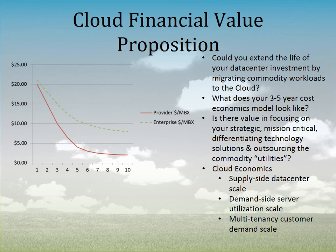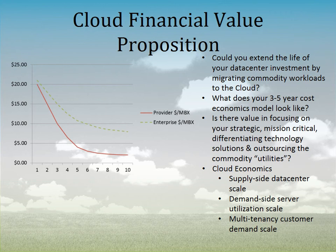And finally, multi-tenancy. If multiple organizations sign up for an email service, Microsoft, Google, or IBM puts a large number of customers on a single environment. By having that multi-tenancy customer demand at scale, the cost per each new individual customer eventually gets to near zero — which provides the opportunity for these cloud providers to pass those savings back to organizations.